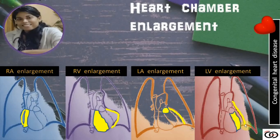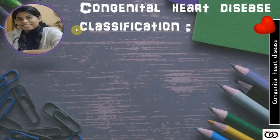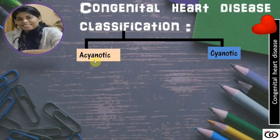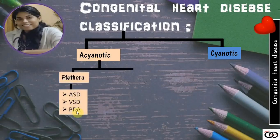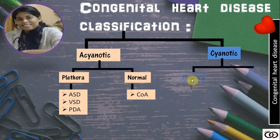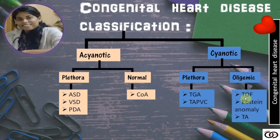Before starting with the individual diseases, let's classify congenital heart disease. They can be acyanotic or cyanotic. Acyanotic heart disease can be with plethora of lung fields — for example ASD, VSD, and PDA — or with normal pulmonary blood flow, for example coarctation of aorta. Cyanotic heart disease can be with plethora of lung fields, for example TGA and TAPVC, or with oligemic lung fields, for example TOF, Ebstein anomaly, and tricuspid atresia.